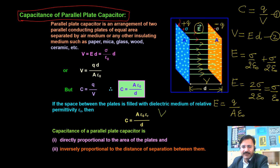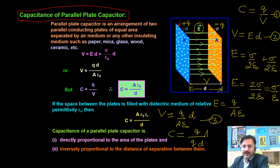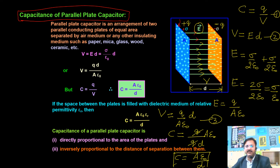Since σ = Q/A (surface charge density), we get E = Q/(Aε₀). Substituting into V = Ed gives V = Qd/(Aε₀). Substituting into C = Q/V, the Q's cancel and the final expression for capacitance is C = Aε₀/d.